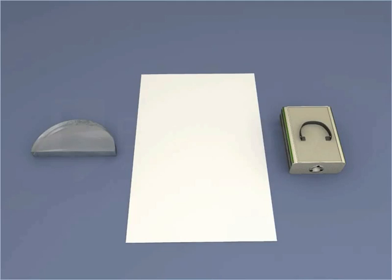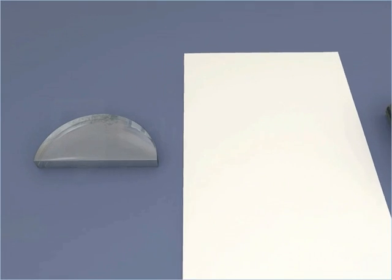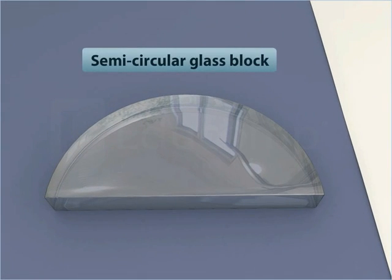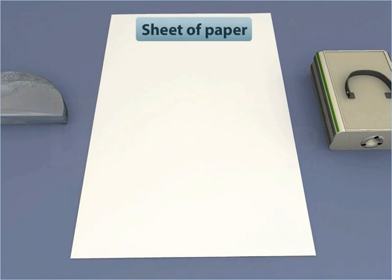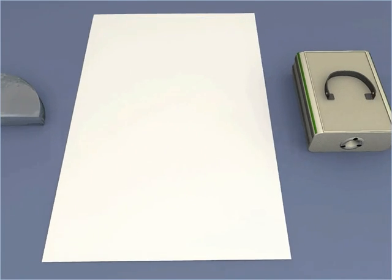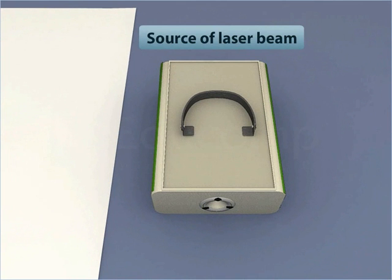To understand what total internal reflection is, let us do an activity. Take a semi-circular glass block, a sheet of paper, and a source of laser beam.